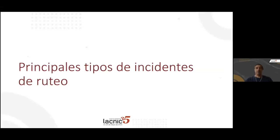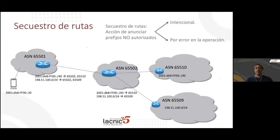We're going to talk about the key routing incident types. What do we mean by routing incidents? Basically, it's a route hijack. What is a route hijack? It's announcing prefixes that we are not authorized to announce. This may be intentional or because of operational errors.